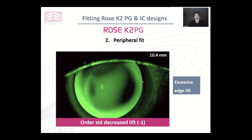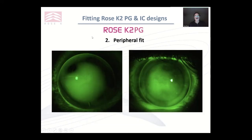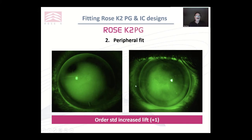This one is getting excessive — over a millimetre — which would make the lens a lot more mobile. You can see it is tending to mislocate out into the temporal portion. So here you'd want to order a decreased lift. Both of these are too tight in the periphery. If you see that black edge, this indicates the edge lift is too tight. You would need to increase it. The standard plus one would give a nice result, resulting in an edge lift like you can see in this part of the lens.